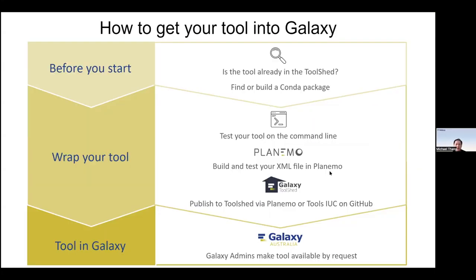Before you start, it's very important to make sure you're not wrapping a tool that someone has already wrapped and that already exists on the Tool Shed. Go to the Galaxy Tool Shed and check if any other developers have already developed or wrapped this tool. If the tool is not available there, find out if it already has a Conda package, because it's easier to wrap the tool using the Conda package instead of building from source code.